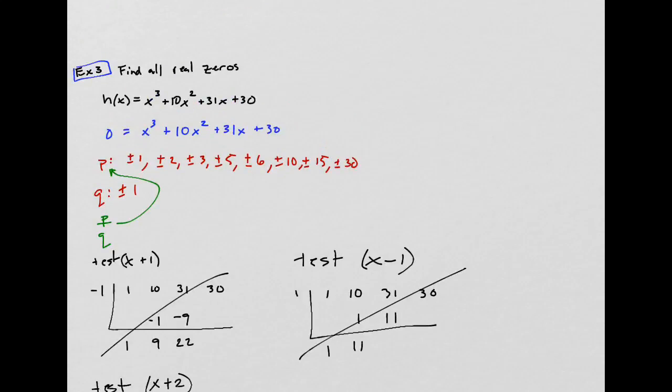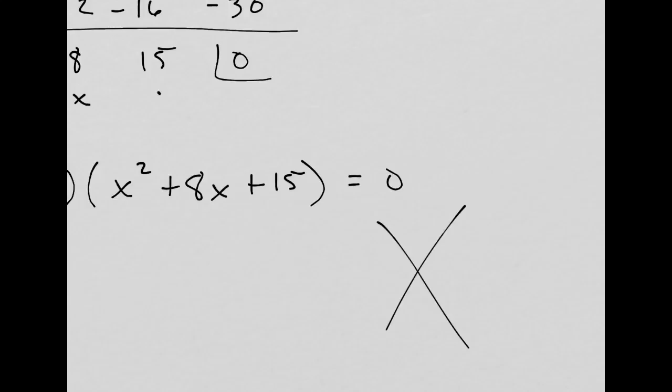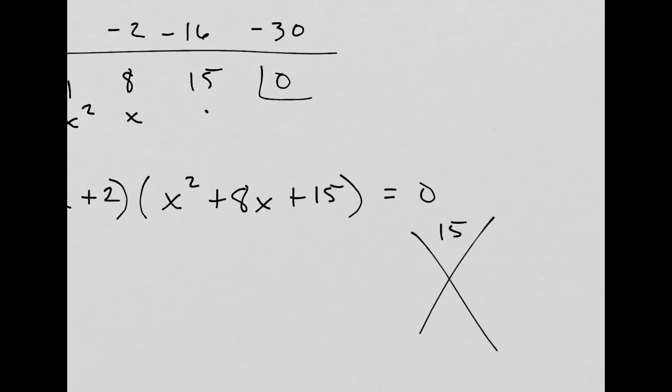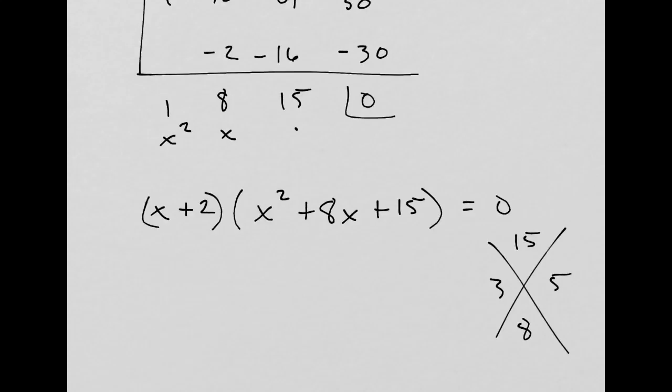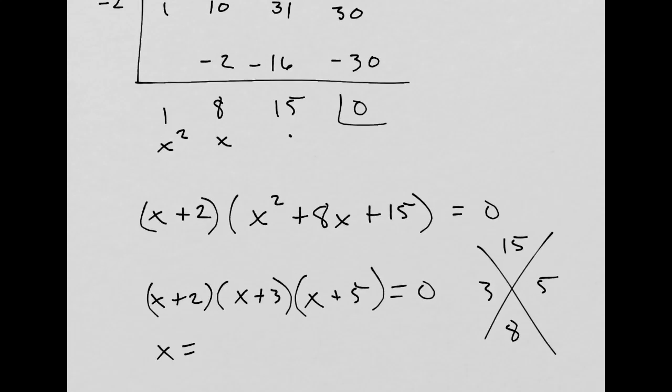So I'll try and use my x on this. 15, 8, what is that? 3 times 5, yes. 3 and 5. Look at that! x plus 2 times x plus 3 times x plus 5. Easy. x equals negative 2, x equals negative 3, x equals negative 5. There we go.